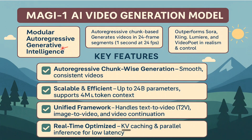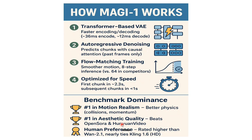Magi1 stands for Modular Regressive Generative Intelligence. It auto-regressively generates videos in 24-frame segments — it doesn't generate the whole video at once. It first generates a part, then uses that generated part to generate the next part. It is able to outperform Sora and is at par with Cling, Lumiere, and Video Poet. It scales up to 24 billion parameters and uses a unified framework that handles text-to-video, image-to-video, and video-to-video continuation.